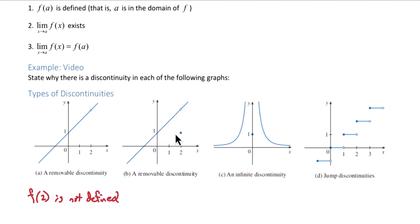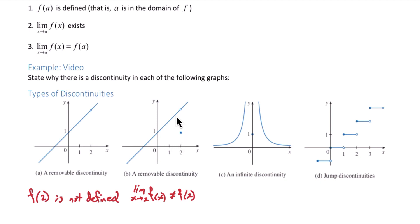Graph B is a very similar type of discontinuity — we still have a removable discontinuity. There's a hole at f of 2 in this linear portion, but f of 2 is defined in this graph. The problem comes in when we look at the limit: the limit as you approach 2 of f of x is not the same as f of 2. f of 2 is defined to be 1, while the limit as you approach 2 from the left and the right is the value of whatever this hole is — it looks like it's around 3. Since those are different, we have a discontinuity.